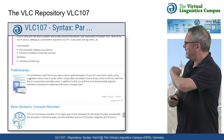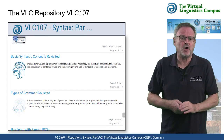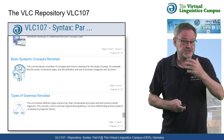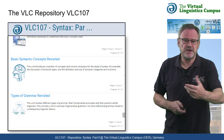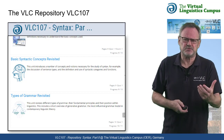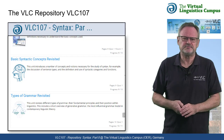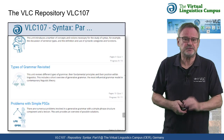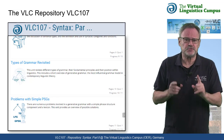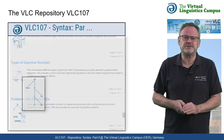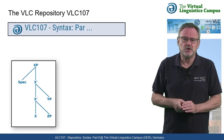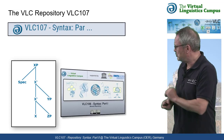Here are the current content topics of VLC 107. We have two topics that look at syntactic categories, syntactic functions, and provide a general overview of the term grammar — basically a summary that you should have encountered before. Then we discuss simple phrase structure grammars and their limitations. The system we are using to represent phrase structure throughout VLC 107 is X-bar Syntax. If you want an overview of X-bar Syntax, look at the respective topic in VLC 106.